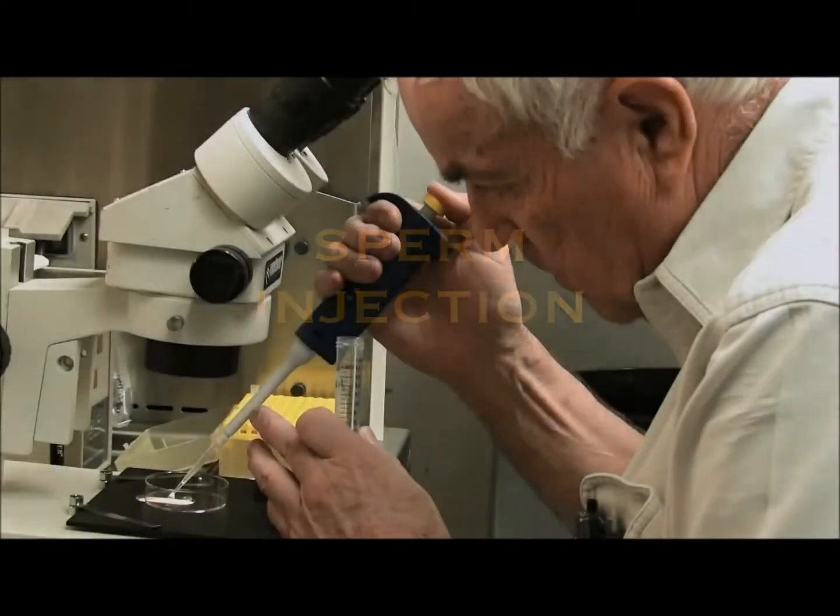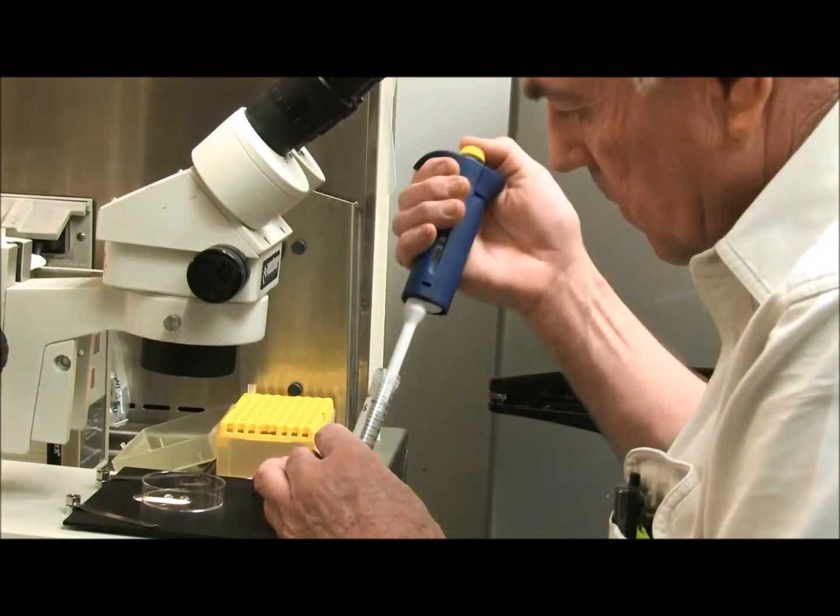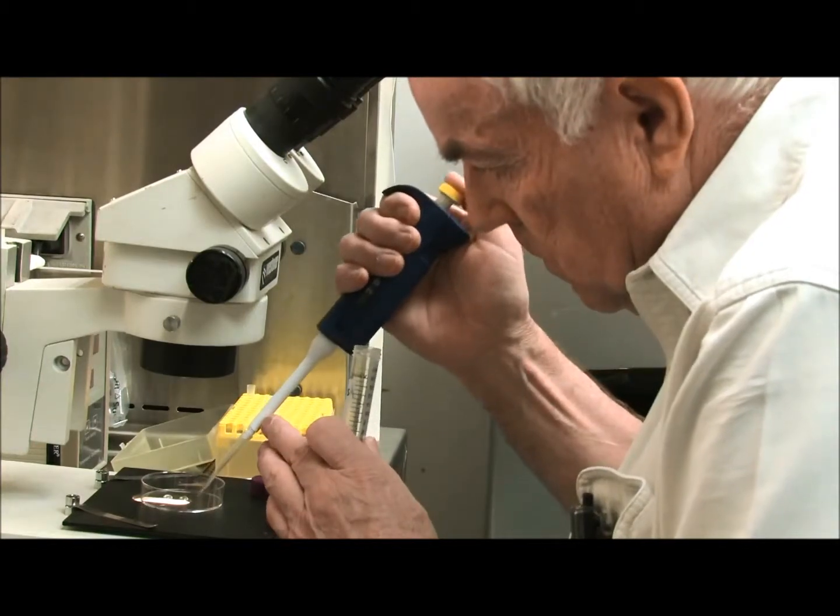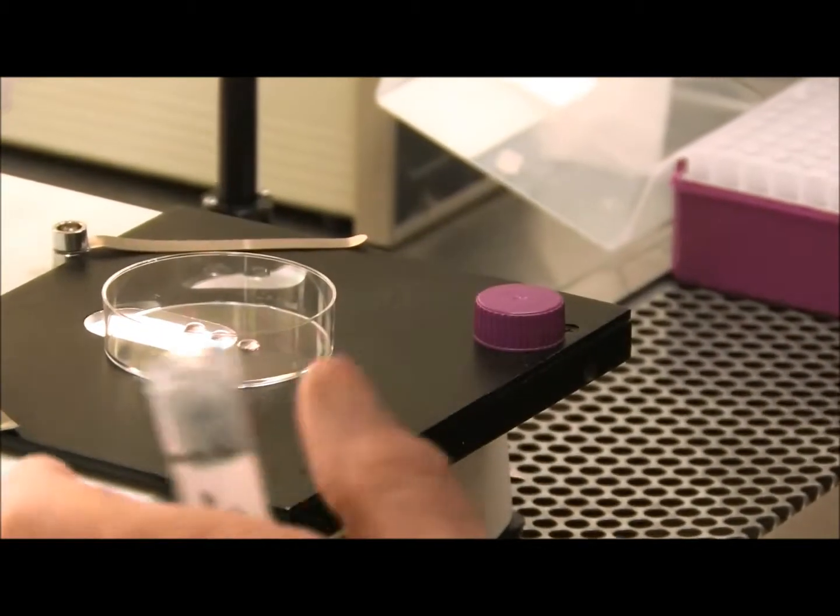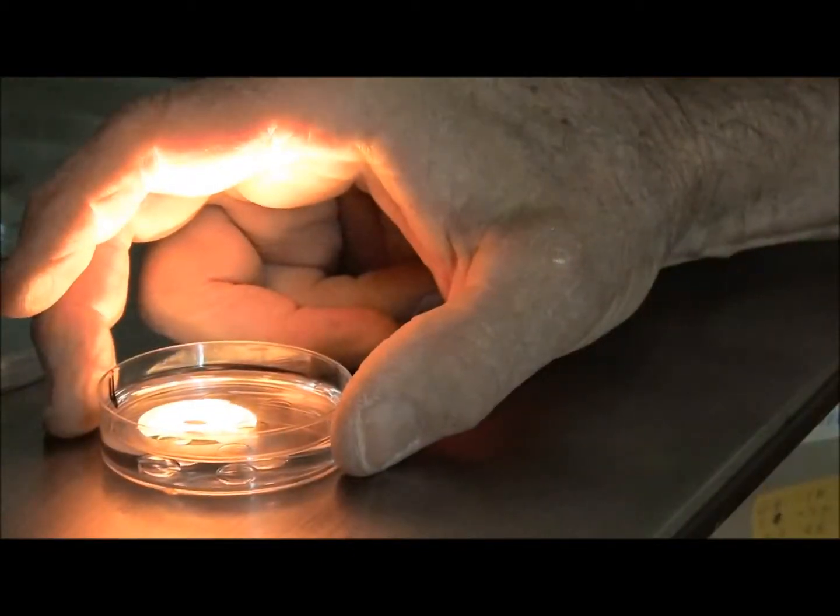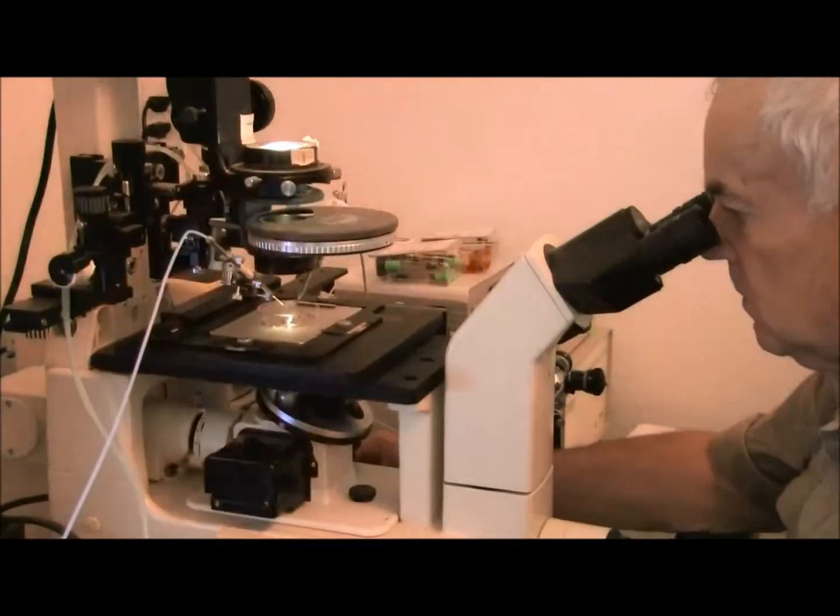The actual sperm injection is accomplished in a small dish with drops of media in which the egg is placed in one and the sperm sample is placed in the other.